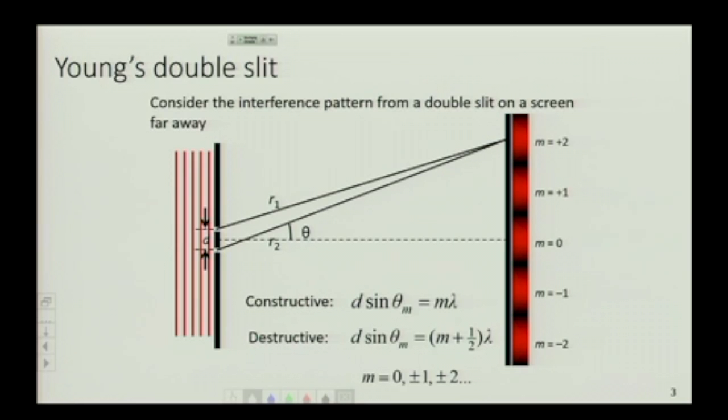So this pattern of fringes, it's called an interference pattern, and for the double slit in particular, the location of those fringes is determined by the separation between the slits, and it depends also on which one of these fringes you're looking at. So M is the number, it's called the order of the fringes, so M equals 0 is the 0th order fringe, M equals 1 is the 1st order fringe, and so on.